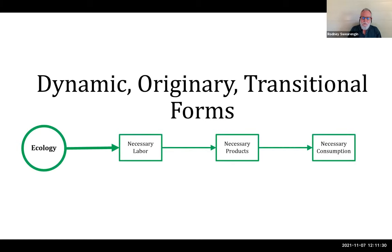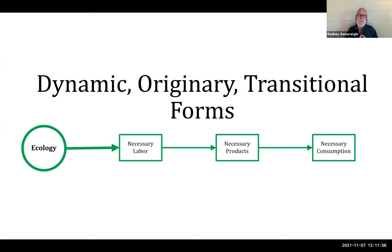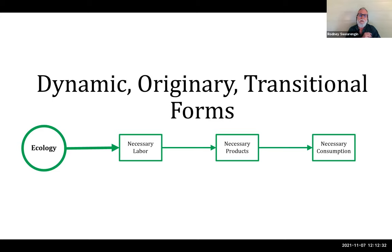At a very fundamental level, human survival relies upon the ecology. You have to have an ecology that supports human life. From the ecology, human beings can put in a certain amount of labor in order to get the products out of the ecology that they need. They need to consume those products, primarily in the form of food — human beings need to survive and they need to eat. In order to eat, which is necessary for life, it's necessary to produce products out of the ecology, and that requires a certain amount of necessary labor.